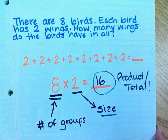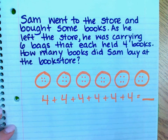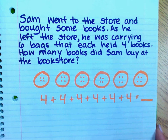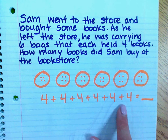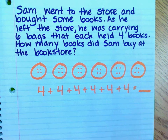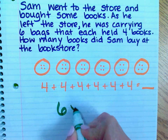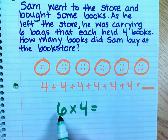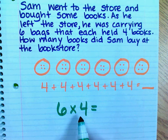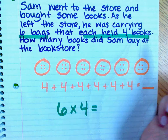Let's look at another problem that we would use multiplication to solve. Sam went to the store and bought some books. As he left the store, he was carrying 6 bags that each held 4 books. How many books did Sam buy at the bookstore? We could solve this with repeated addition — 4 plus 4 plus 4 plus 4 plus 4 plus 4 — but that wouldn't be efficient. So we represent it with a multiplication problem: 6 times 4, because the first factor represents the number of groups, and the second factor represents the size of each group.